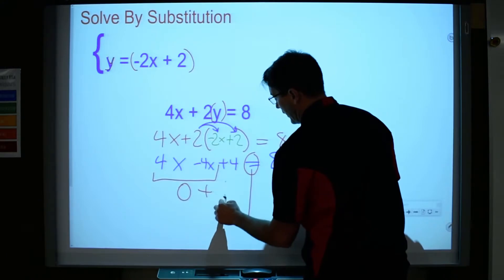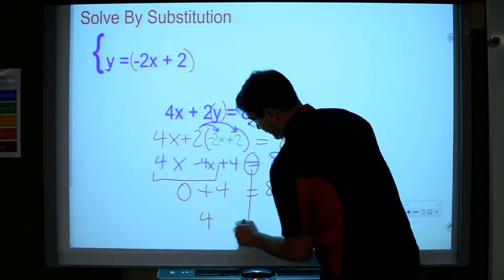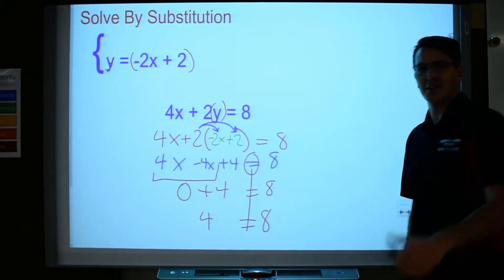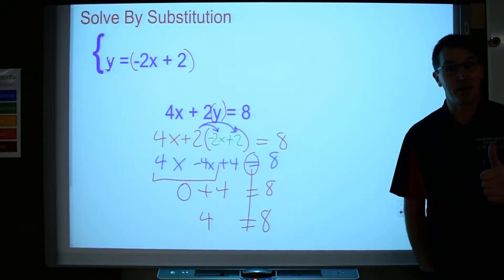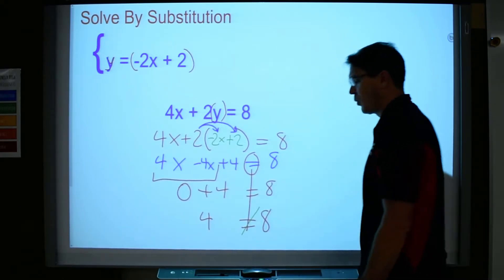I go 4x minus 4x is 0, and plus 4, and 0 plus 4 is 4, and 4 equals 8, right? Yes or no? And the answer is a big resounding no. And so that means, what's going on here? If 4 doesn't equal 8...